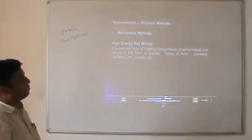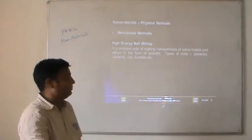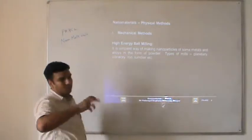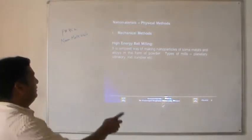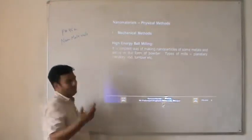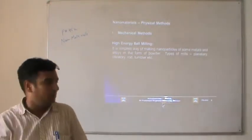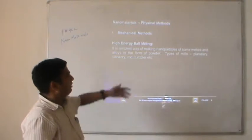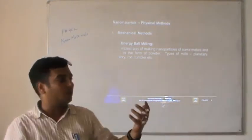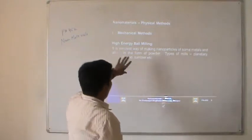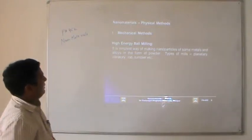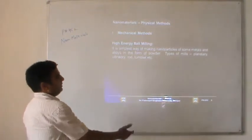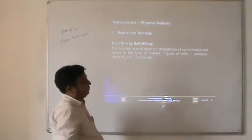The first technique for the synthesis of nanomaterials is the basic methods, and one of them is high energy ball milling. Ball milling is the milling or mixing of a material sample in the presence of balls. The balls may be tungsten, carbide, or steel balls. The RPM is very high, and in high energy ball milling there are a number of parameters we can control. It is the simplest way of making nanoparticles of some metals and alloys in the form of powder.